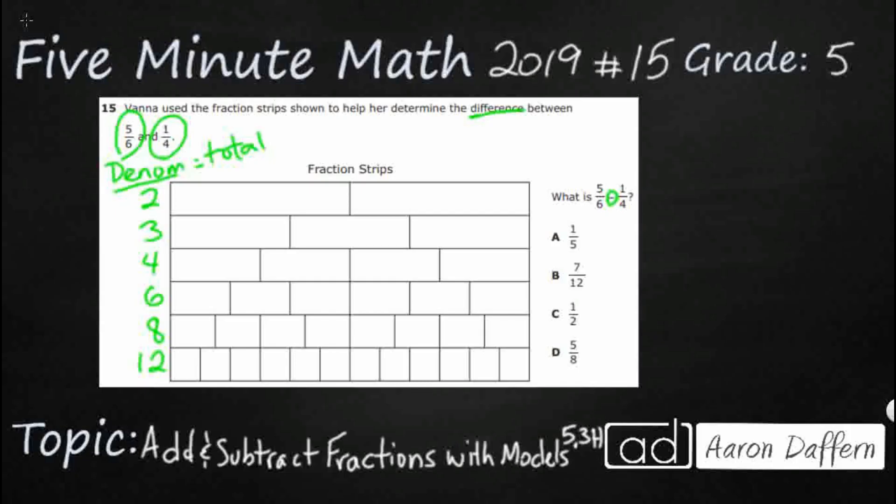So we need to figure out 5/6 and 1/4. Let's figure out 5/6. So here's our sixths, that's our sixth row. And so let's just go ahead and shade in 5/6. That's one, two, three, four, five, right there. So we're just going to shade this in just like this to visually represent 5/6.